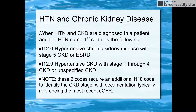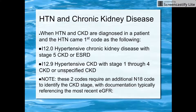When a patient has hypertension and chronic kidney disease and the hypertension was diagnosed first, you code as follows: I-12.0 is hypertensive chronic kidney disease with stage 5 chronic kidney disease or ESRD. I-12.9 is hypertensive CKD with CKD stage 1 to 4 or unspecified. N-18 must be used with the above codes to identify the chronic kidney disease stage.